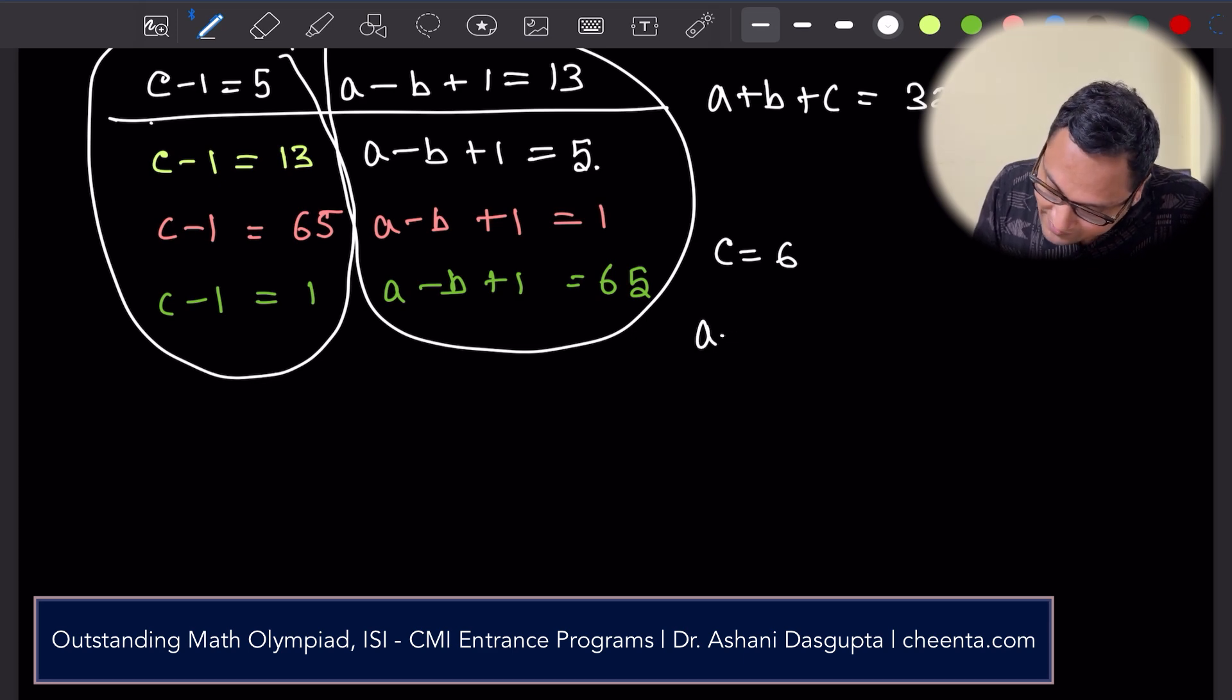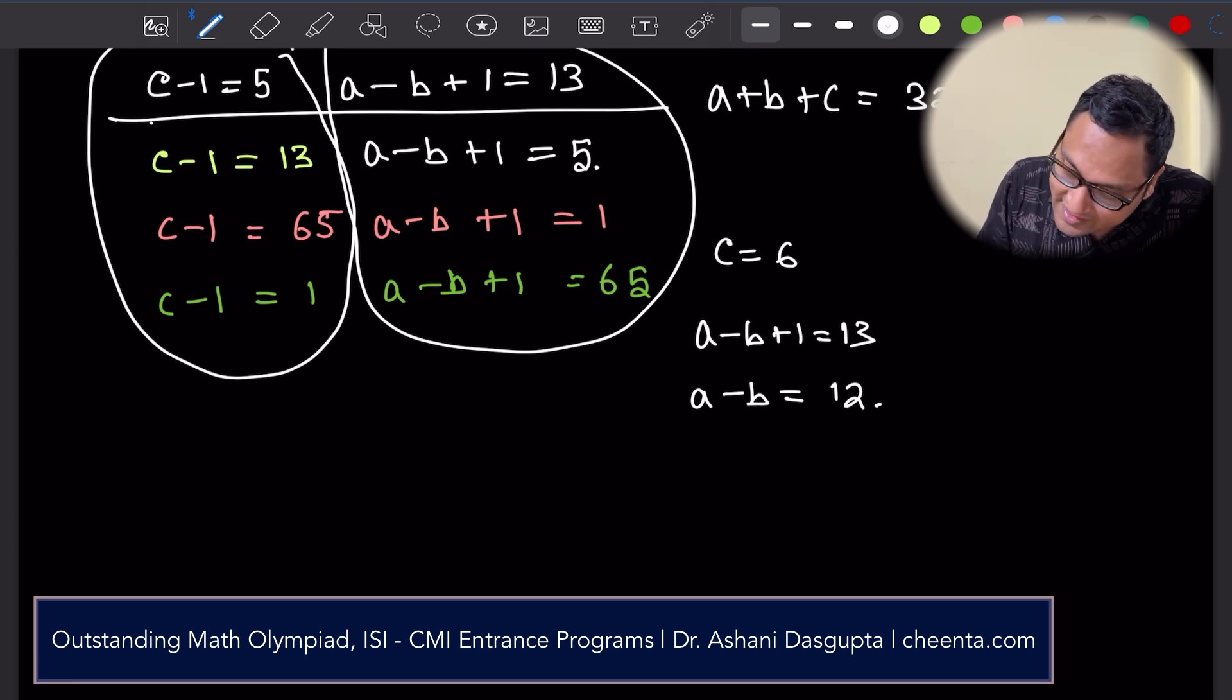c minus one is five, so c is six. And a - b + 1 is 13, that means a - b is 12.